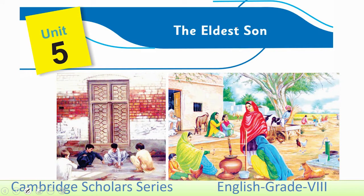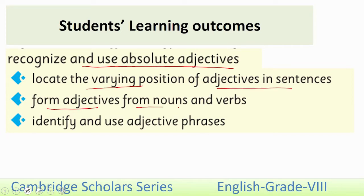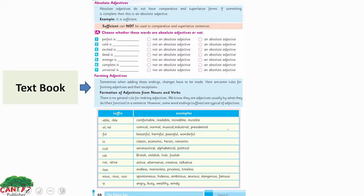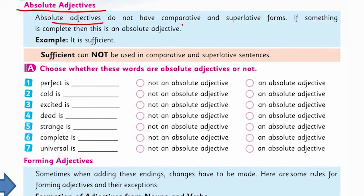We are going to start our lesson from Unit 5, 'The Eldest Son.' The objectives of this lesson are: recognize and use absolute adjectives, locate the varying position of adjectives in sentences, form adjectives from nouns and verbs, and identify and use adjective phrases. Page number 68 of your textbook.